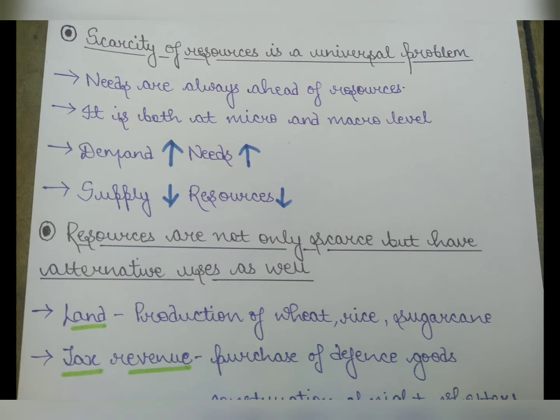We want to achieve one thing, then another thing — we have no limit to our needs. And this is not only on the micro level or individual level, it is also on the macro level. Our demands and needs are very much, but the supply and resources are less.